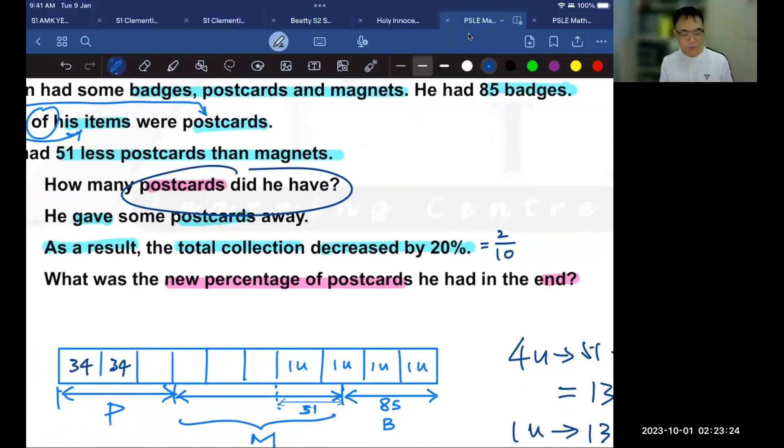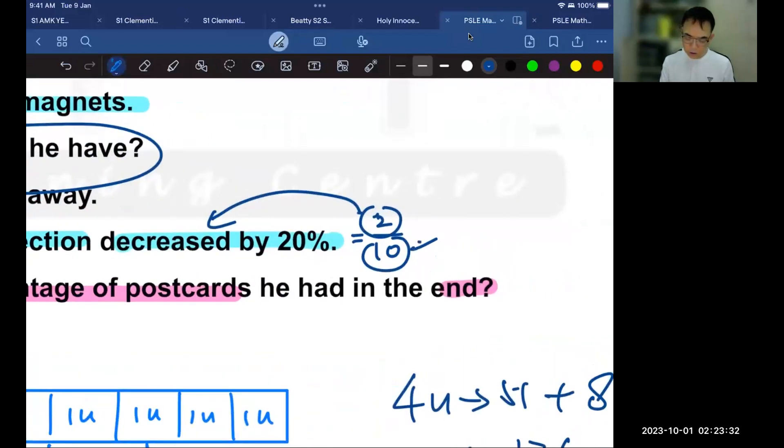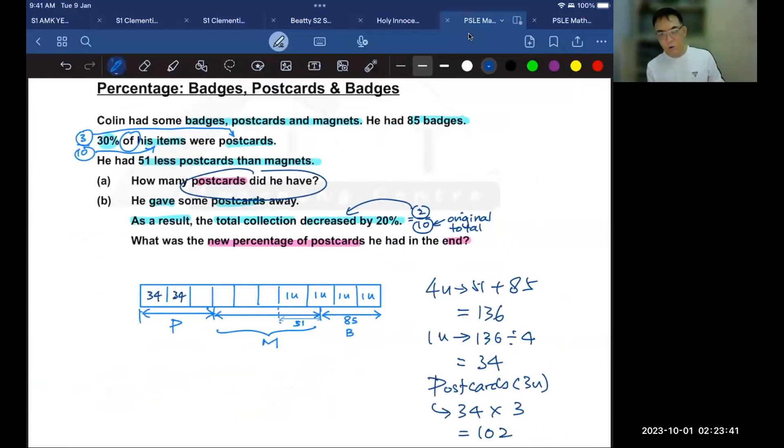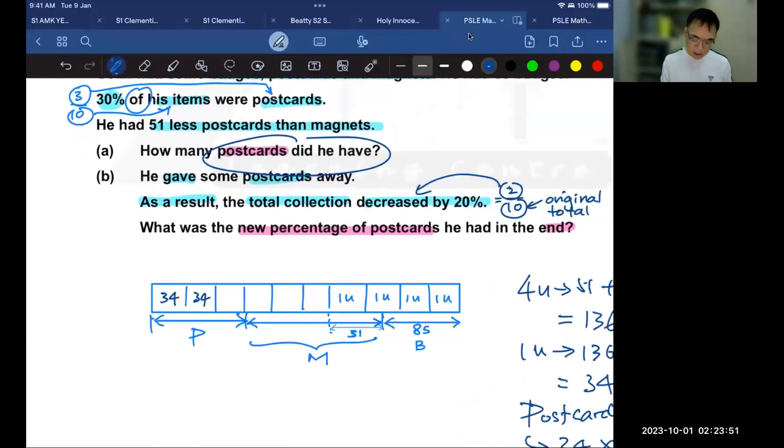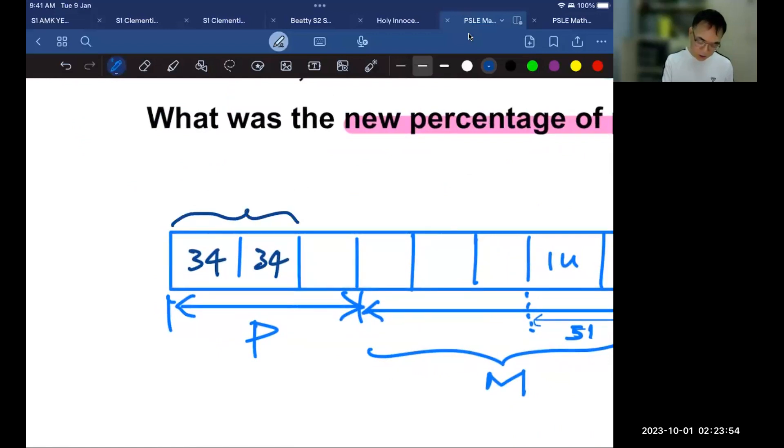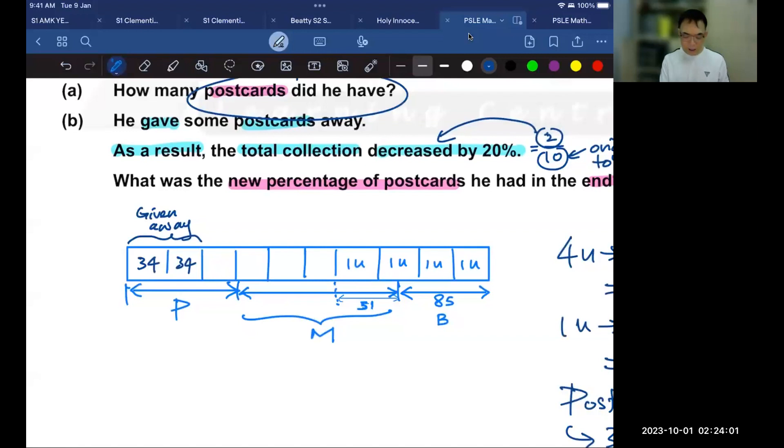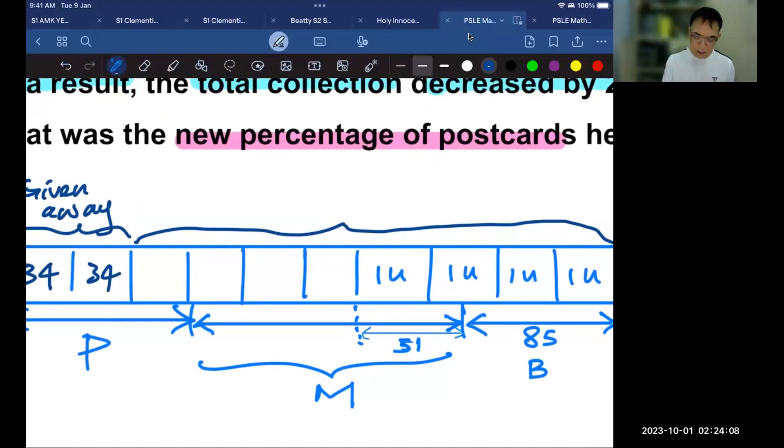So what is the 2 and 10? The 2 is the decrease and the 10 is the original total. However, we also have to note that the 2 units that were decreased were all postcards because that's all he gave away. So if that is the case, then I know that this is what was given away. And if this was given away, then in the same way, this is what is remaining. And this represents the new total.